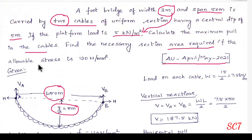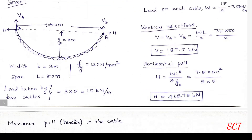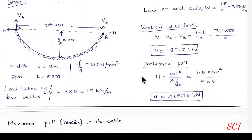If the allowable stress is 120 N/mm², it is a very simple question. Looking at the given data, there is a drawing with a 50m span, central dip 5m, width B equal to 3m, L equal to 50m, and stress Fy equal to 120 N/mm².